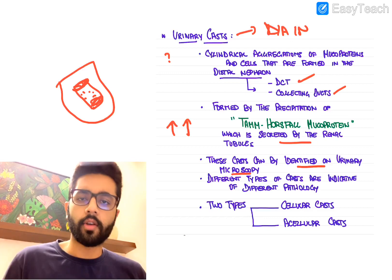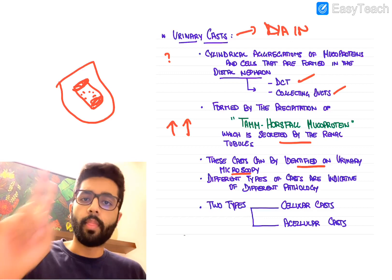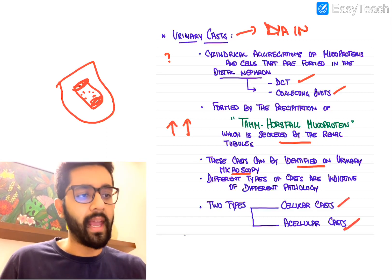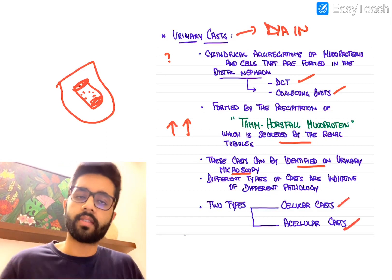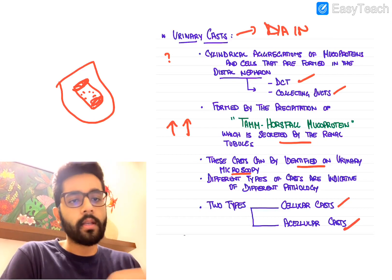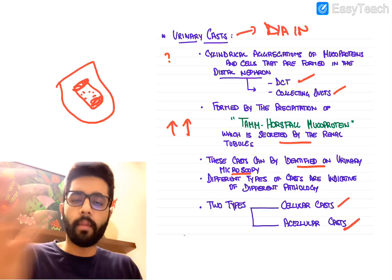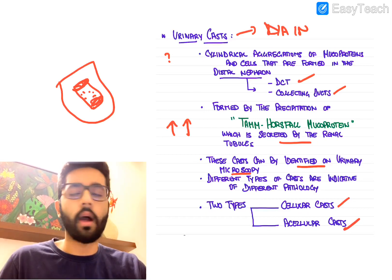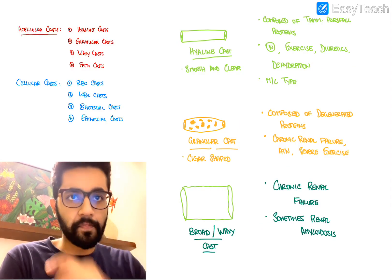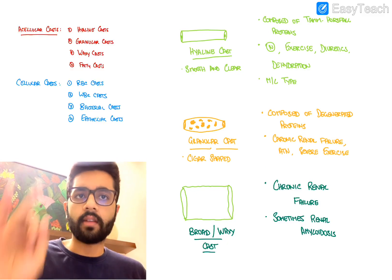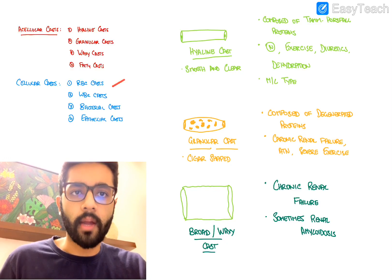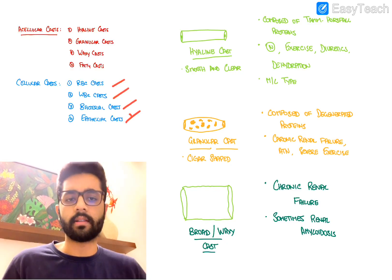Depending on the morphology, there are two types of urinary casts: cellular casts and acellular casts. Casts containing cells are called cellular casts; those with no cells — just aggregations of mucoproteins — are called acellular casts. Under acellular casts, you have hyaline casts, granular casts, waxy casts, and fatty casts. Under cellular casts, you have RBC casts, WBC casts, bacterial casts, and epithelial cell casts.